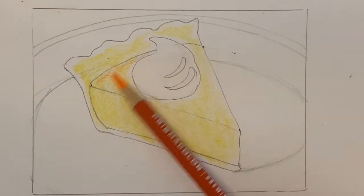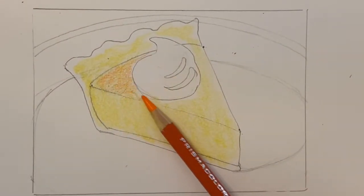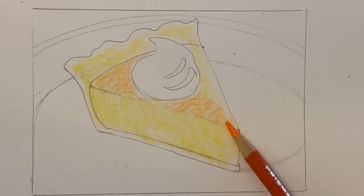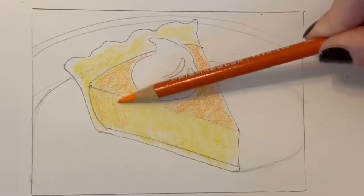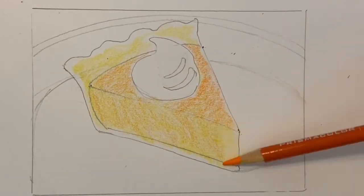Next, I'm going to layer with orange pencil. I'm going to use more orange on the top of the pie piece and a little bit less on the side so that the sides look more of a yellow orange.